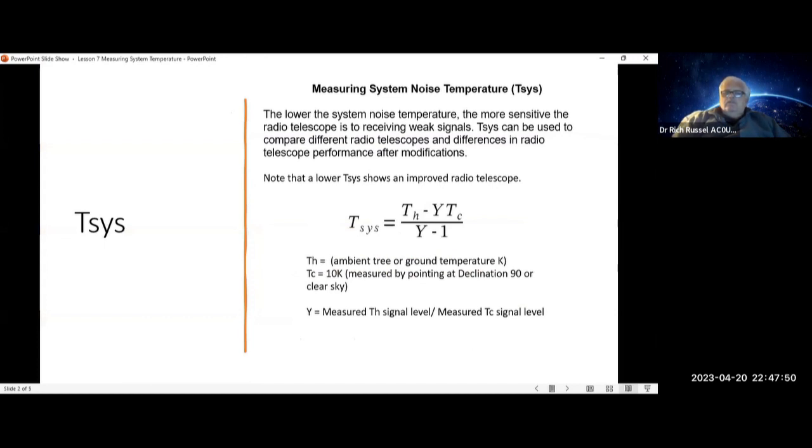The lower the system noise temperature, the more sensitive the radio telescope is to receiving weak signals. T-SYS can be used to compare different radio telescopes and differences in radio telescope performance after modifications. Note that a lower T-SYS shows an improved radio telescope.